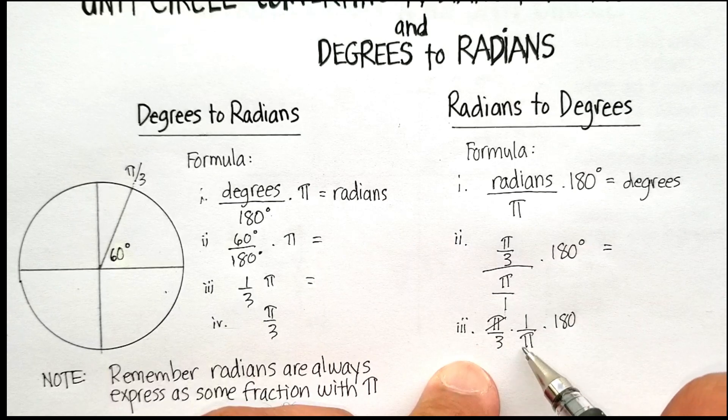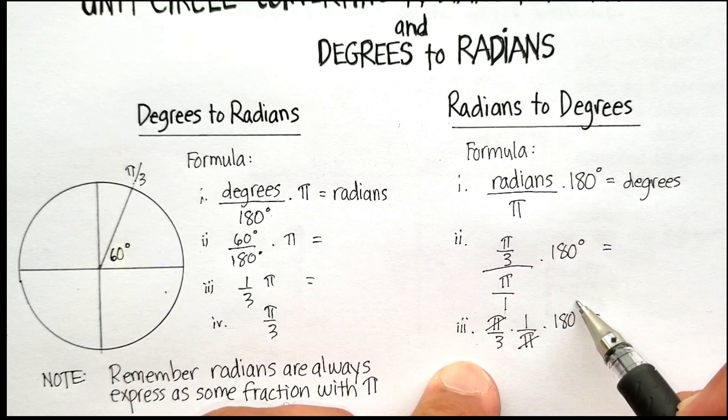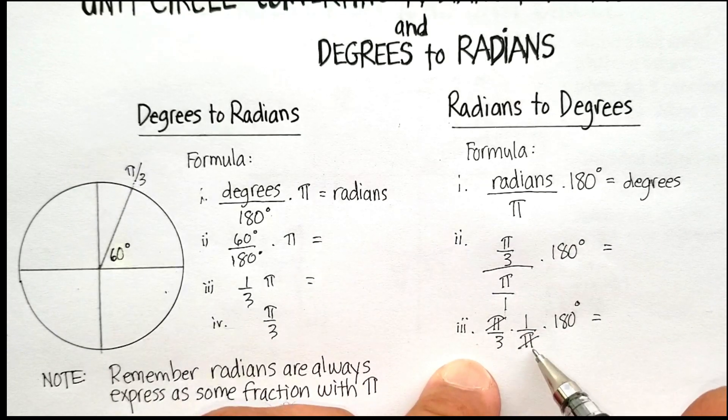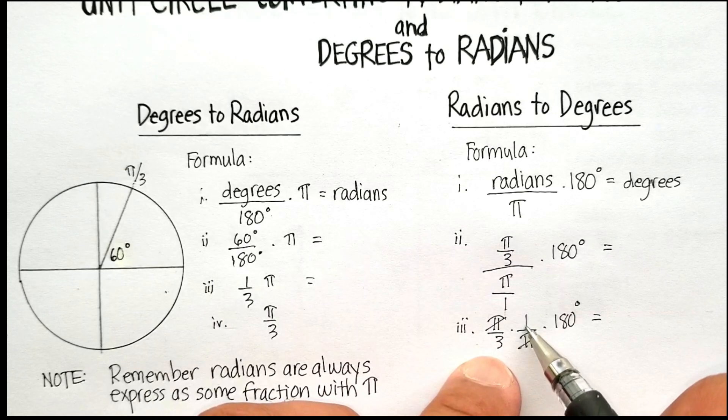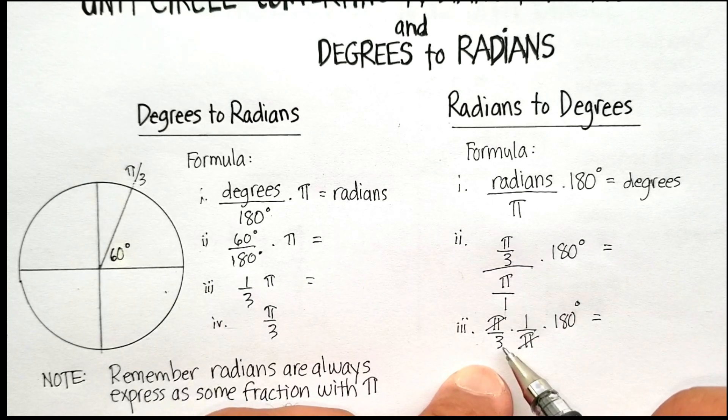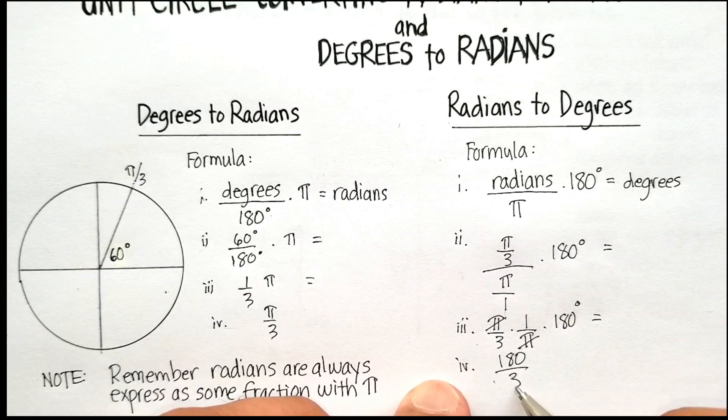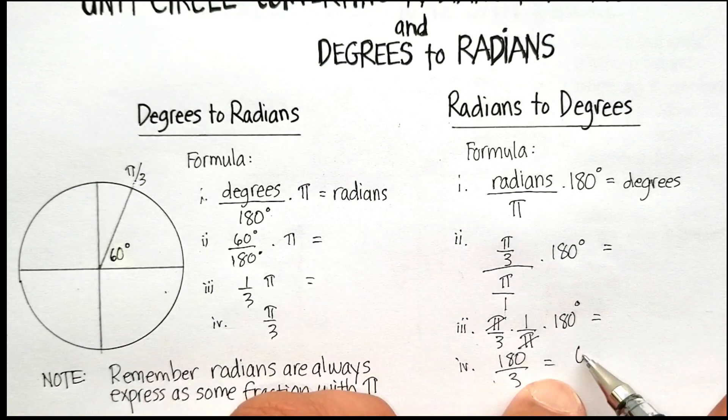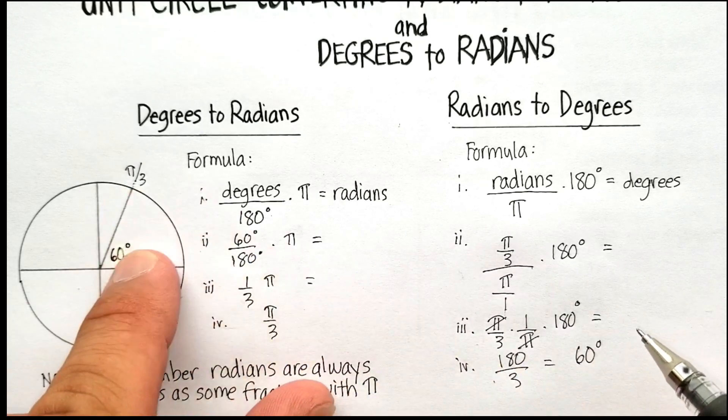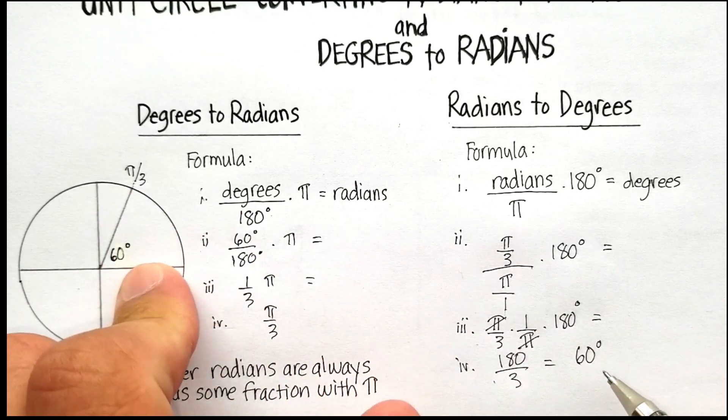This is going to cancel out, and that's going to be equal to the number of degrees. This is going to cancel out my pi's, and I'm going to be left with 1 times 180 divided by 3. So 180 divided by 3 will give me my 60 degrees, which is what I knew it was originally.